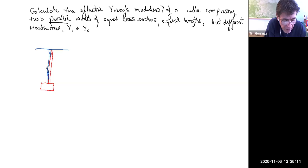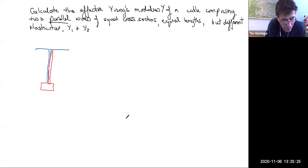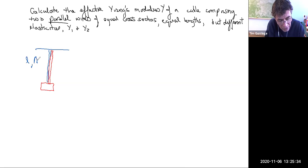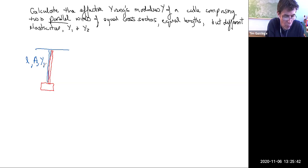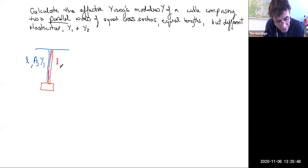Here's a sketch of the arrangement: the blue wire on the left, the red wire on the right, and some mass causing stress on the two wires. The length of the wire on the left is L, the cross-sectional area is A, and its Young's modulus is Y1. Correspondingly, the length of the wire on the right is L, its cross-sectional area is A, and its Young's modulus is Y2.